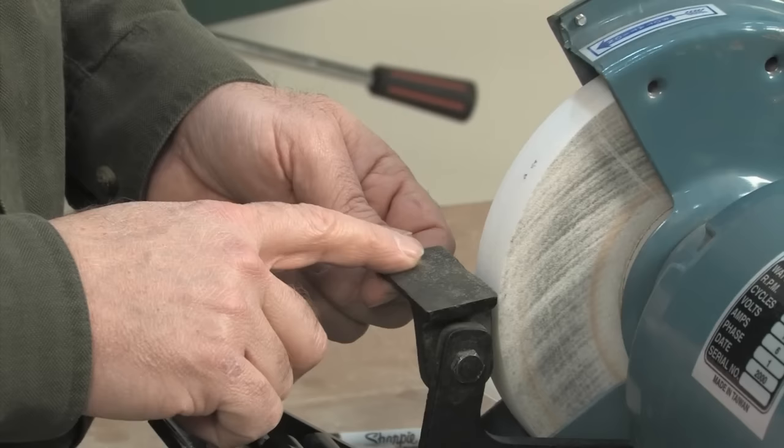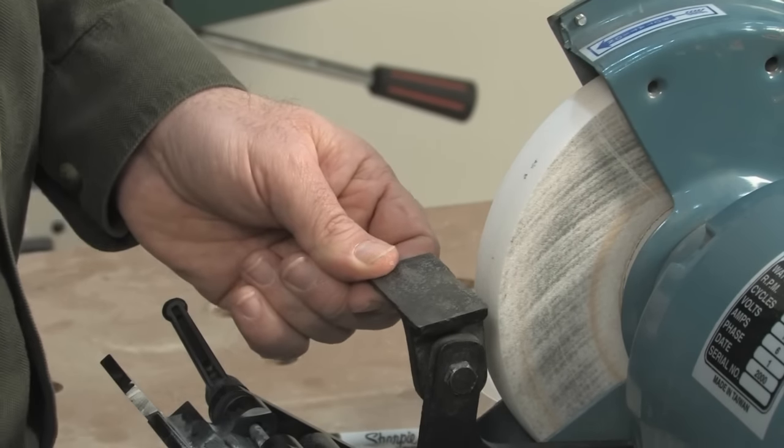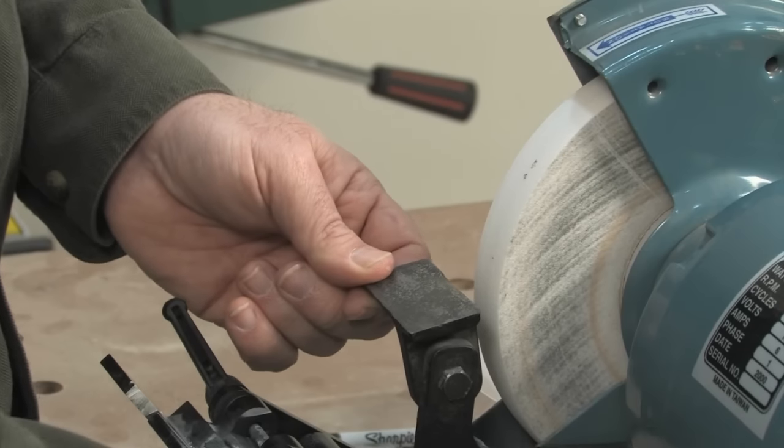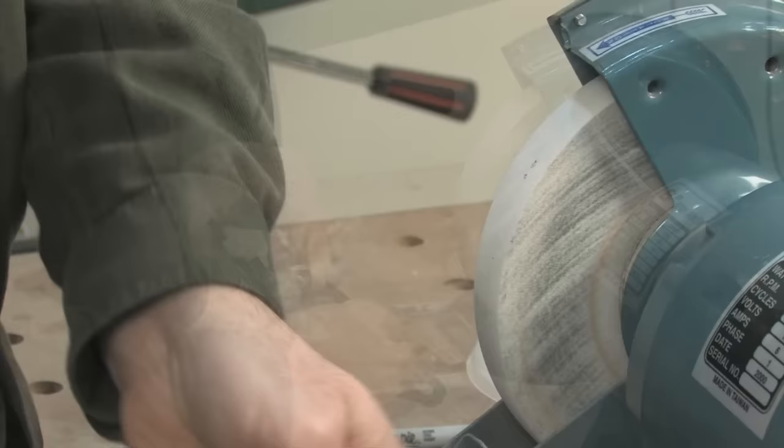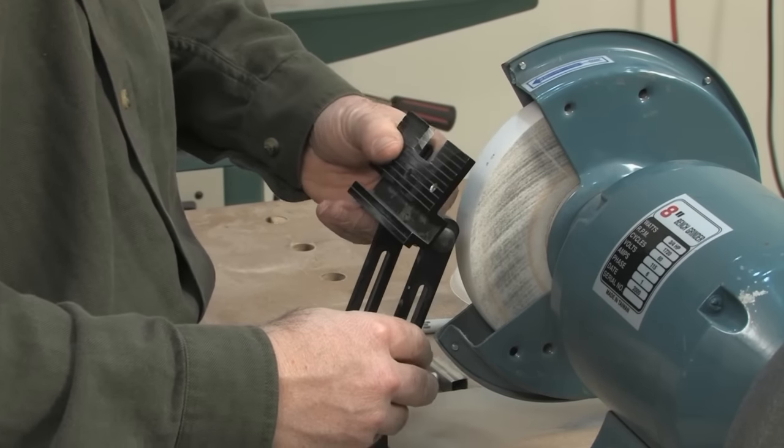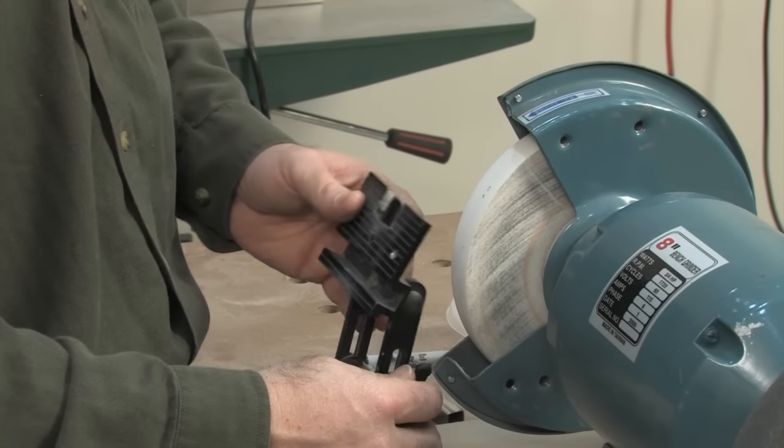The second thing is you want to throw away your old tool rest. These old tool rests stink, in a word. They're too rough, too small, and too hard to adjust. Get yourself an aftermarket rest like this Veritas from Lee Valley, which adjusts quickly and easily in every direction.